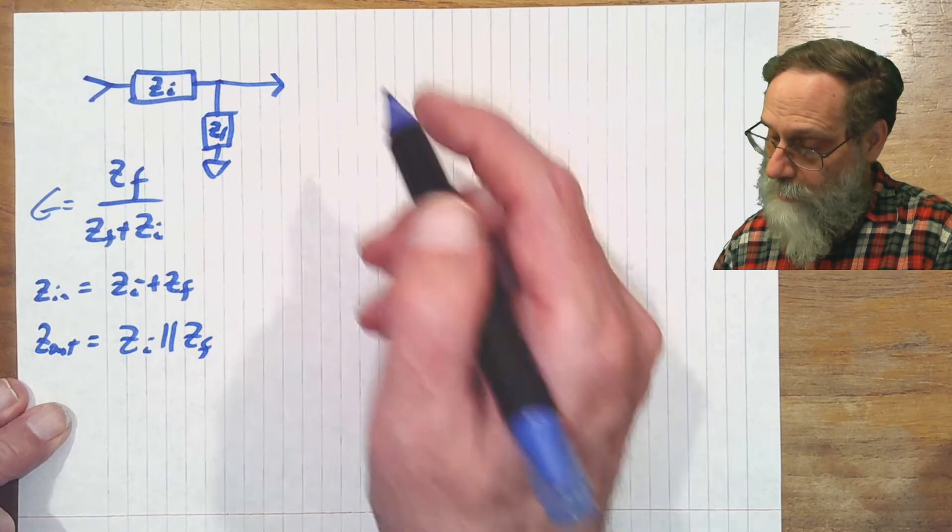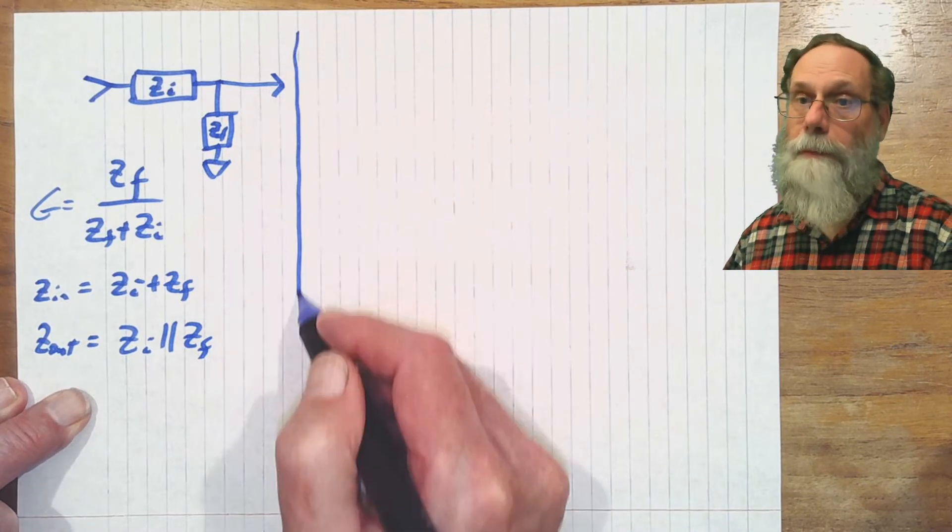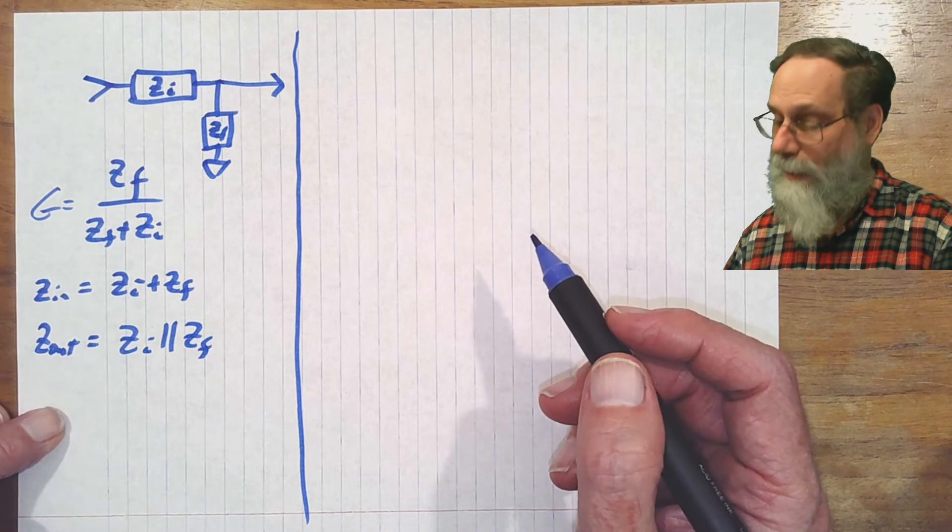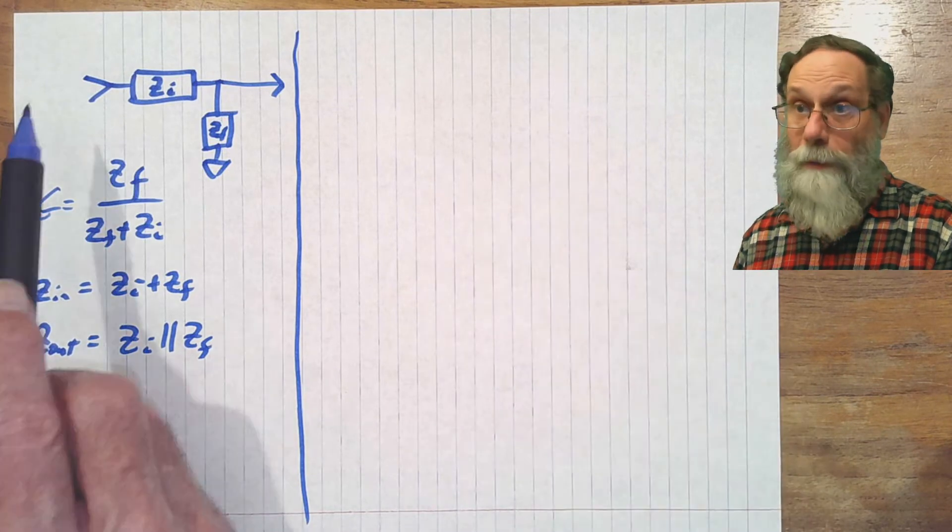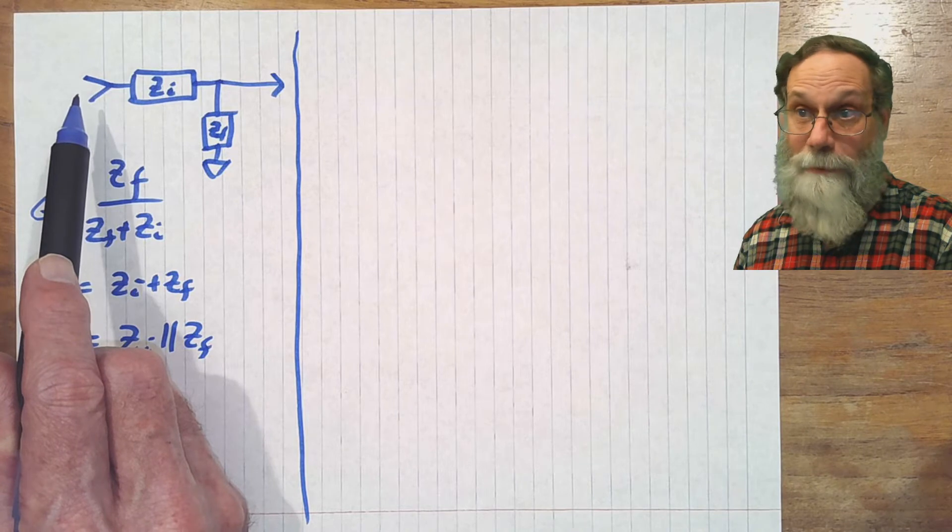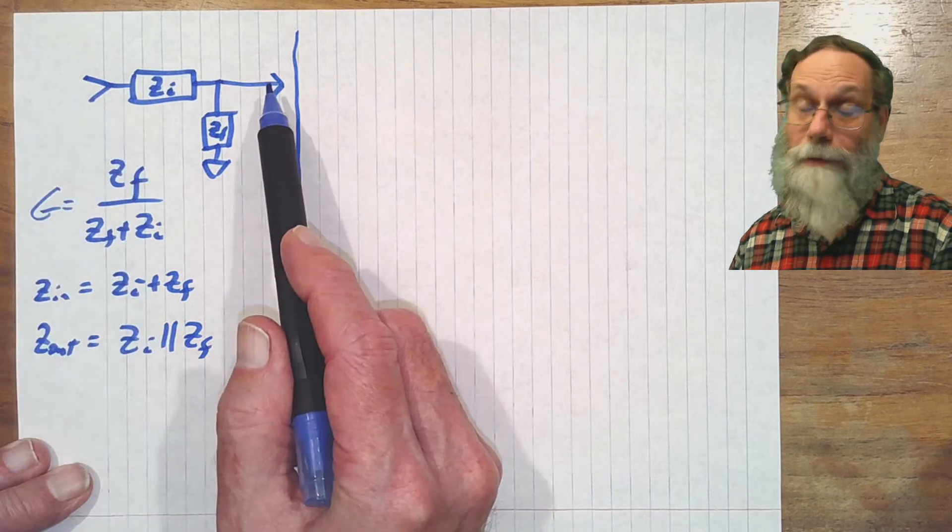So if you are trying to drive a load out here, you've got possibly substantial impedance, which can cause you problems unless the thing out here really doesn't take any current. So passive was relatively simple, but only if you had a fair amount of current available at the input and didn't take any current from the output.